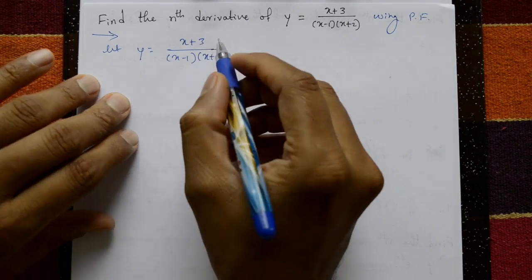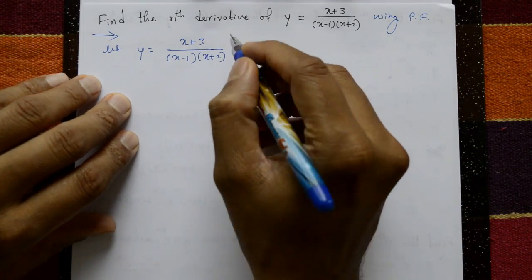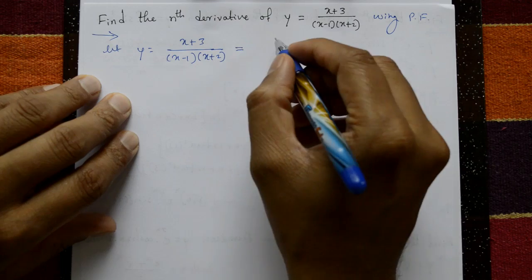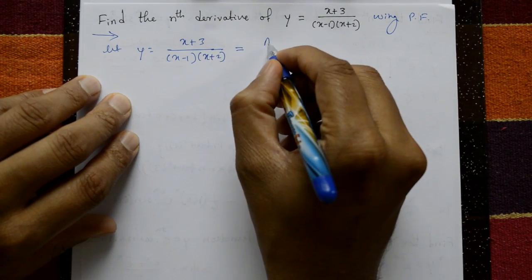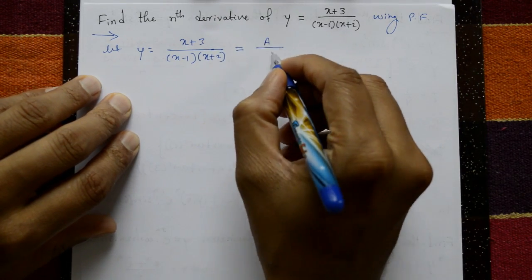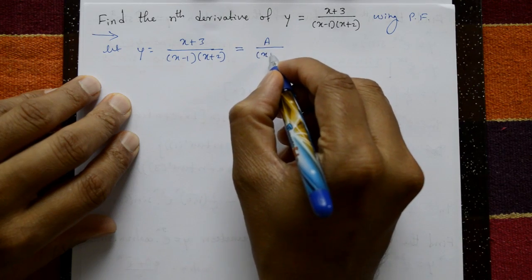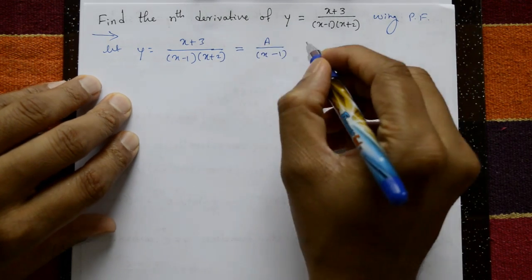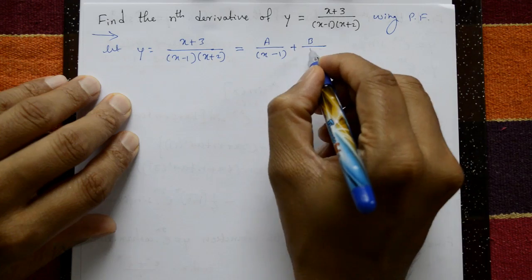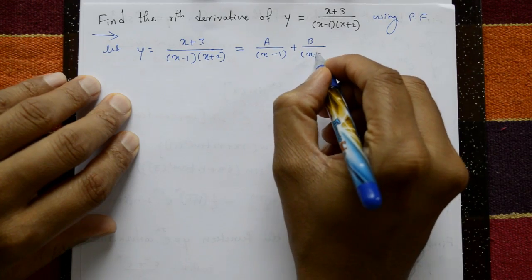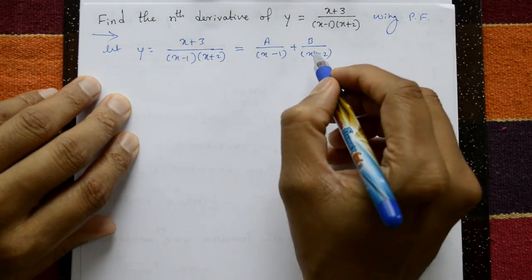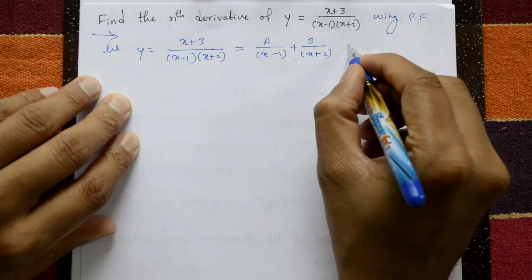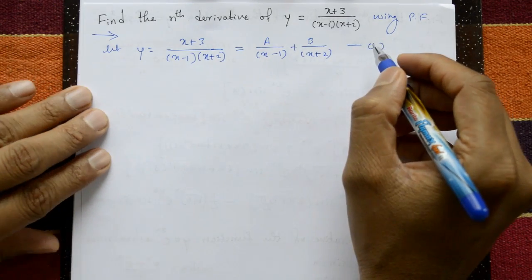Find A and B: write as A/(x-1) plus B/(x+2). Call this equation number 1.